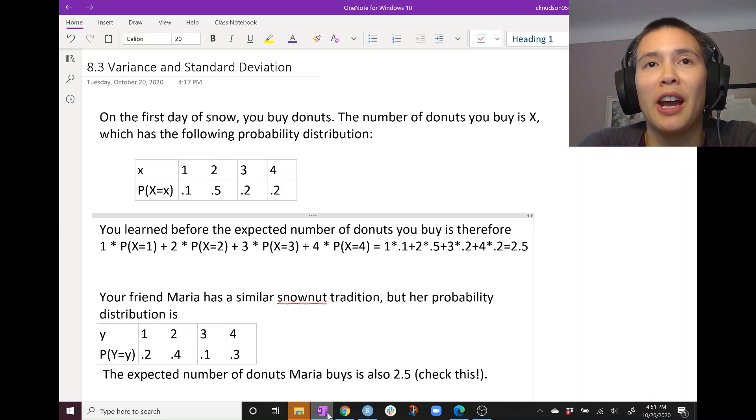So today in Minneapolis it is snowing and it's the first snow of the fall/winter. Suppose you have a tradition that on the first day of snow you go out and buy donuts. The number of donuts that you buy can be described by random variable X which has this probability distribution.